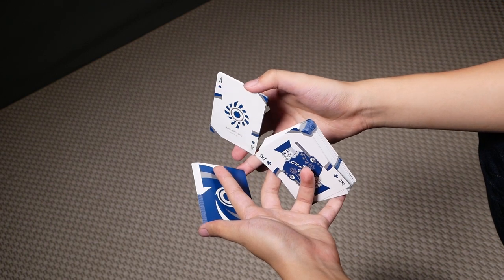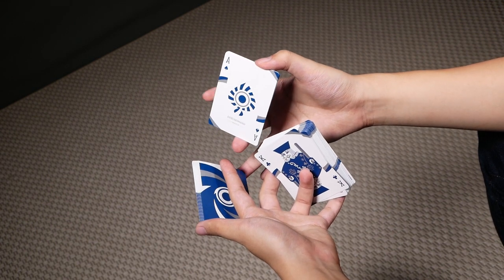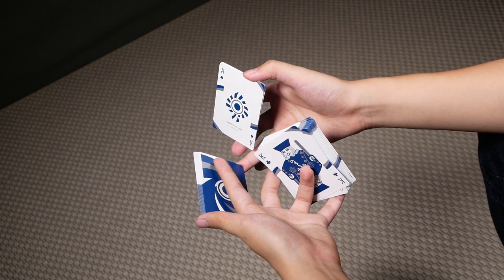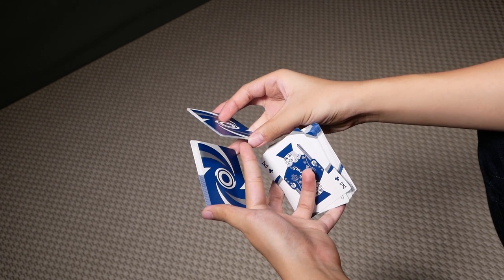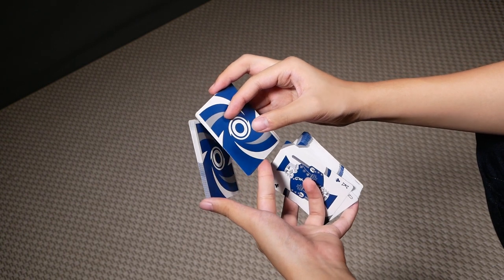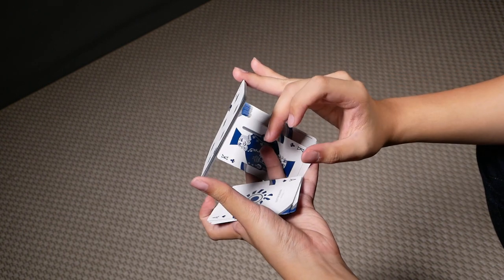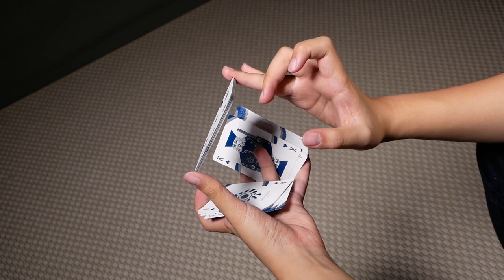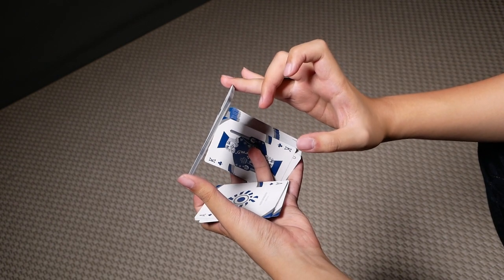And once you're in this position, you want to re-grip this top packet here by having your left index contact the bottom short edge of the packet like so. You then want to push downwards with your right middle until the packet falls in your palm.